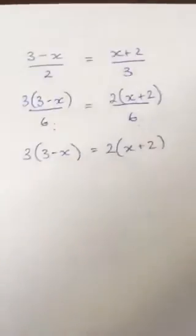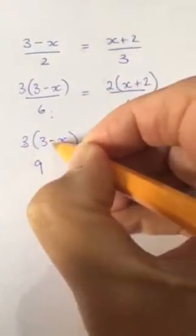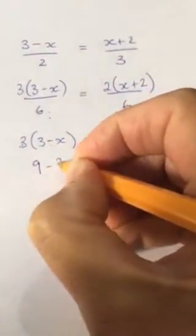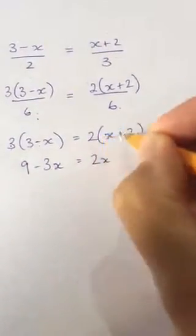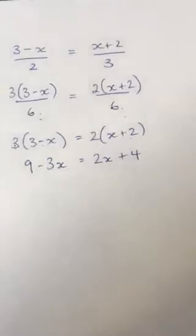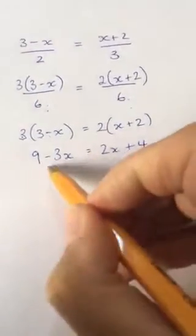Then expand my brackets. 3 times 3 is 9, 3 times negative x is negative 3x. 2 times x is 2x, 2 times 2 is 4. Now we want to collect the x's on one side. Negative 3x is the lowest.